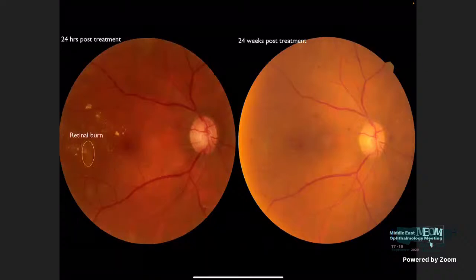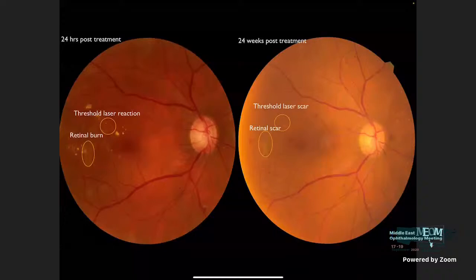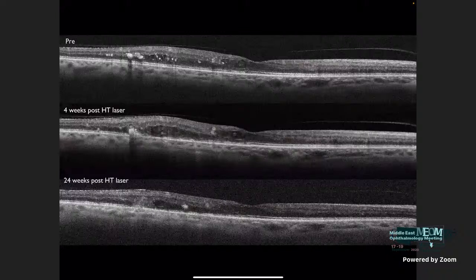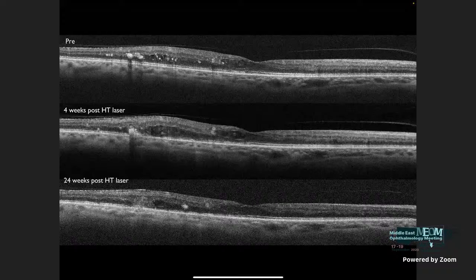This is how a retinal burn looks, and this is how the threshold laser looks — I made this to show the difference between both of them. This is how it looked 24 hours post-treatment and how the retinal scars appear using threshold microsecond laser, and how the threshold laser scan looks after 24 weeks post-treatment. The OCT shows the macular edema, and at 4 weeks post-HT laser there is a retinal scar. However, this scar did not expand or change at 24 weeks follow-up, and I achieved stabilization and reduction of retinal thickness.